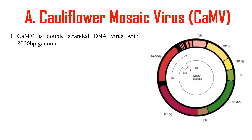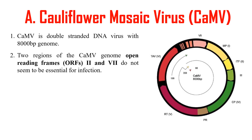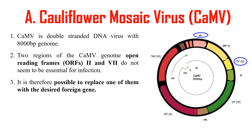Let's discuss DNA viruses first. The cauliflower mosaic virus is a double-stranded DNA virus with a genome of 8,000 base pairs. The two regions — ORF 2 and ORF 7 — are open reading frames that are not required for virus infection. Since these are non-essential, we can replace ORF 2 and ORF 7 with our foreign genes.